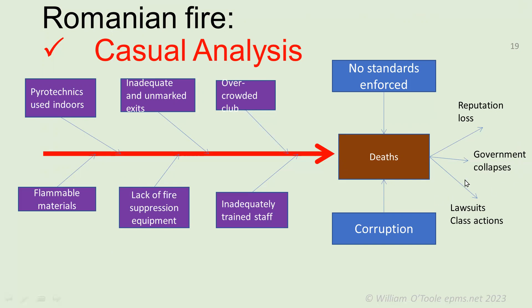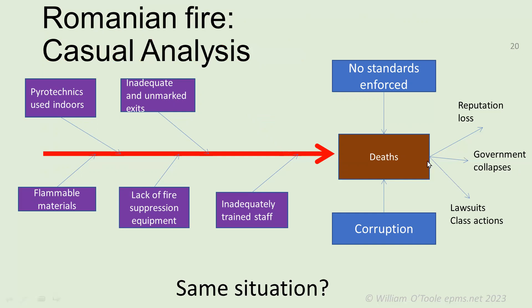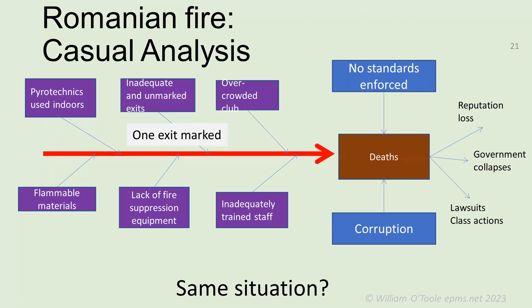The government actually collapsed as a result of this because there was so much corruption — people knew about the risks. And there were standards, which is a very important point: it's all very well to have standards, but you've got to remember they've got to be enforced. People think that just by writing standards, they're fine. What you do with causal analysis is take away one of the contributing factors and ask: would this still result in the deaths? For example, if one of the exits had been marked, would it have led to the same number of deaths? That's how you think through something that's happened in the past, and that's why information about these disasters is so important.